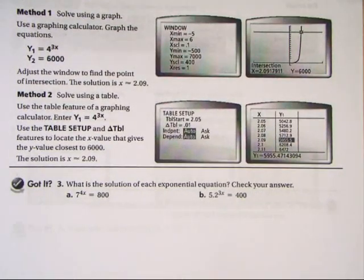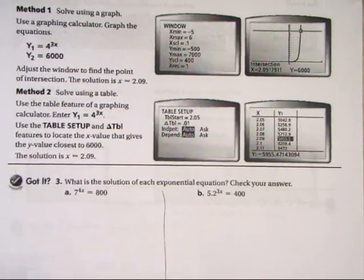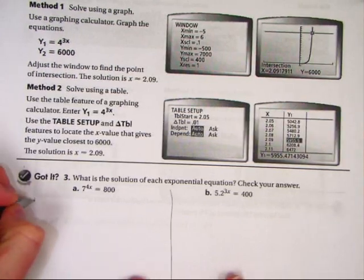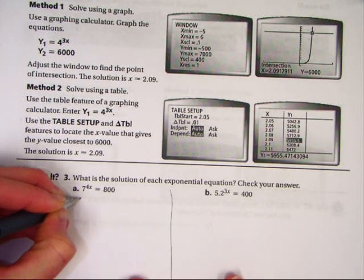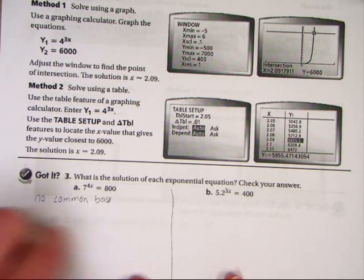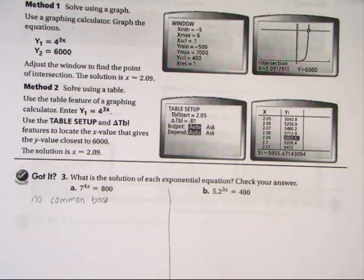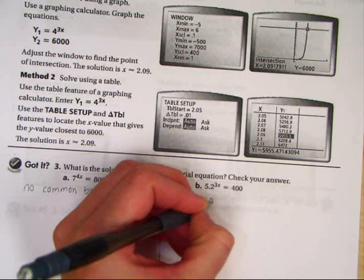What is the solution to each exponential equation? Check your answer. Let's do A and B. We're going to do these the way that we're used to. You should notice there is no common base. And over here, you should realize there's no common base either.